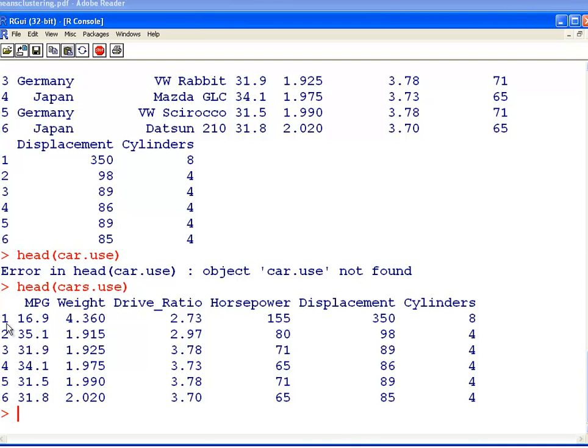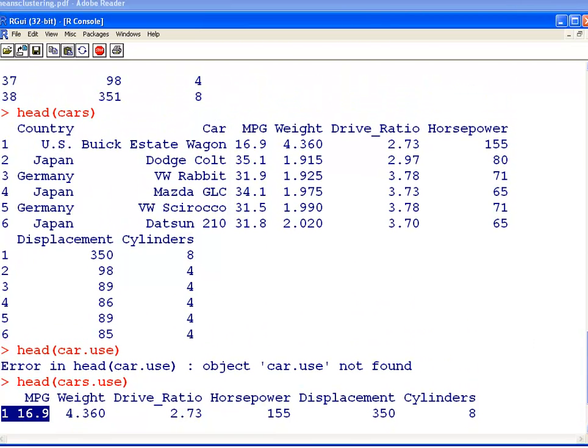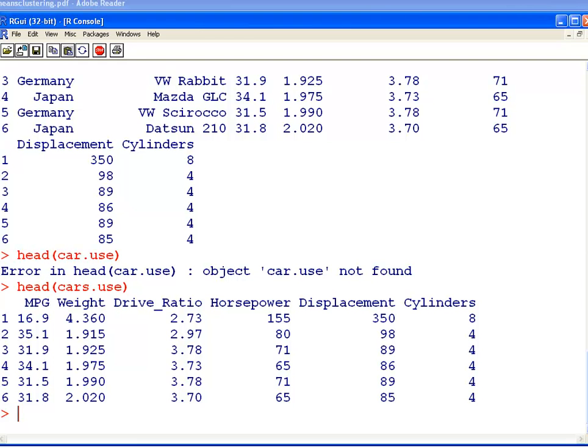What might happen here is that this first case, this first car, which is the Buick Estate Wagon, it might start off in cluster one and then stay in cluster one for a while, then it actually might get reassigned to cluster two, and then maybe bumped up to cluster three, or moved back around. Essentially, it's not stuck in the same cluster for the whole time through.